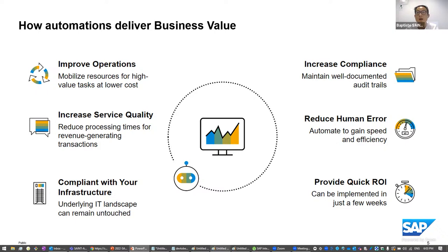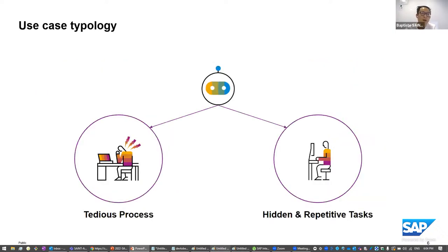We can increase the compliance — for example, to maintain some documents for audits. Another important point with automation is the reduction of human errors. Humans can make errors when manipulating data, whereas bots won't. Finally, you can have a quick return on investment because a bot can be developed within a few weeks and be available very quickly. A typical use case for this kind of robot is any tedious and repetitive process.